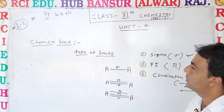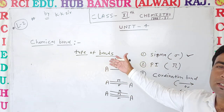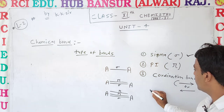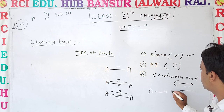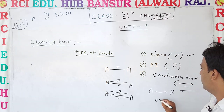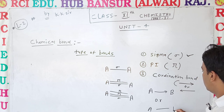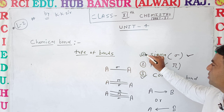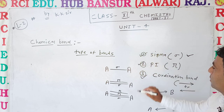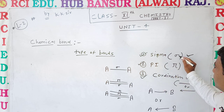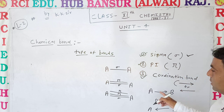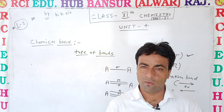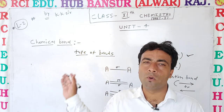So today we saw the definition of chemical bond, and also the types of bonds: sigma, pi, and coordination bonds. Coordination bond is represented by a one-directional arrow between atoms A and B. Sigma bond forms first, then pi bond. In the next class, we will see one by one the concepts and theories which explain the formation of bonds. Thank you.